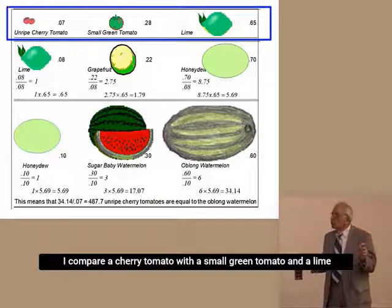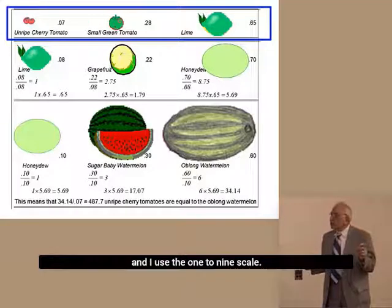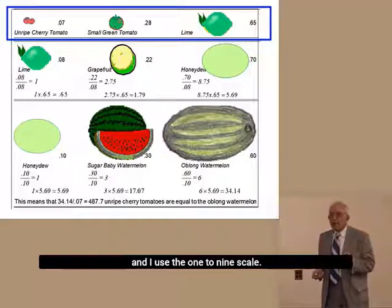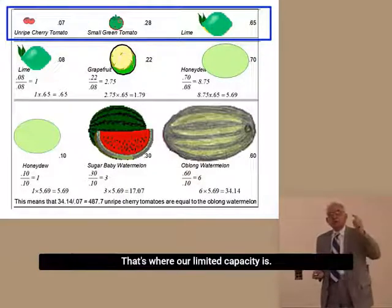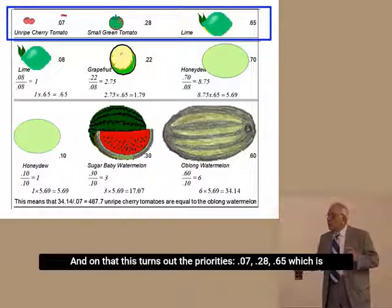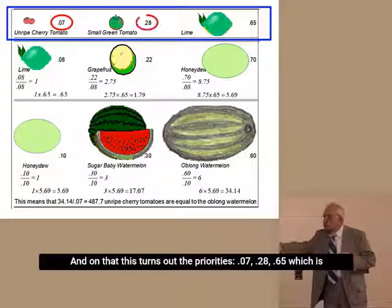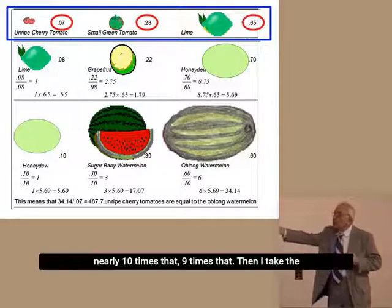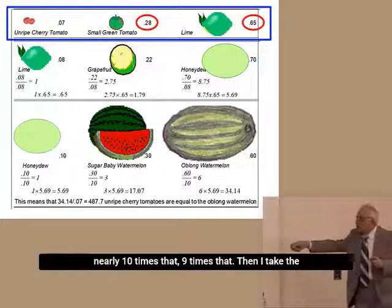I compare a cherry tomato with a small green tomato and a lime, and I use the 1 to 9. That's where our limited capacity is. And on that, this turns out the priority 0.07, 0.28, 0.65. This is all nearly 10 times that, 9 times that.